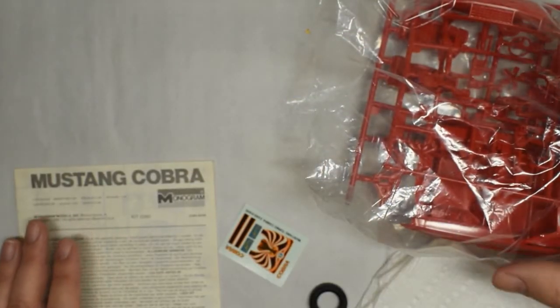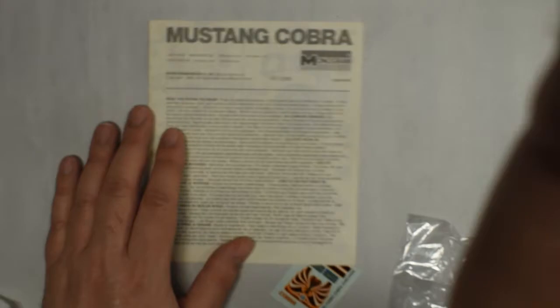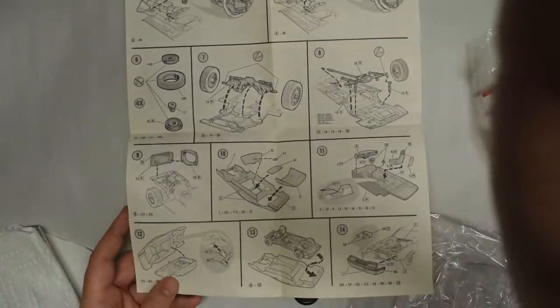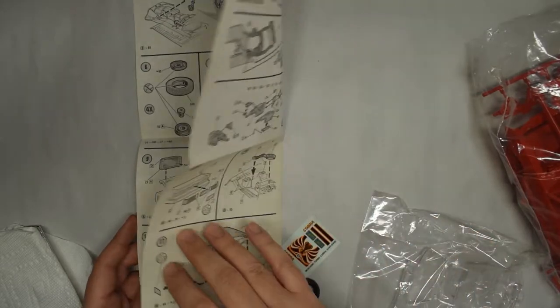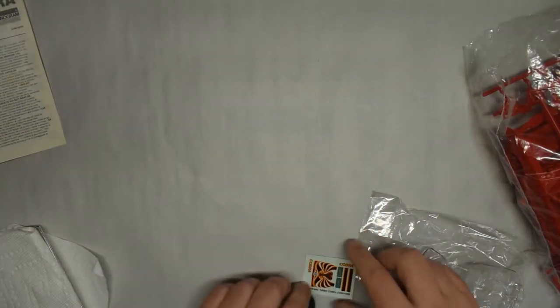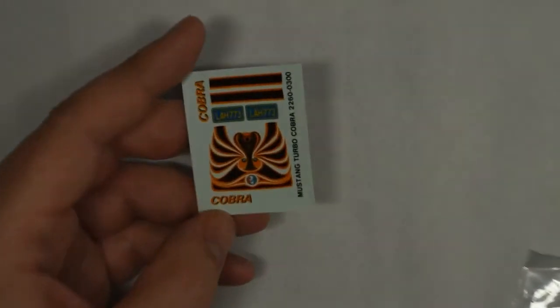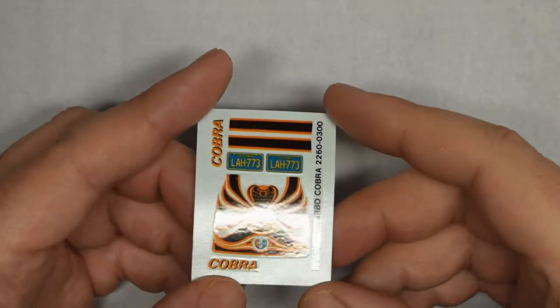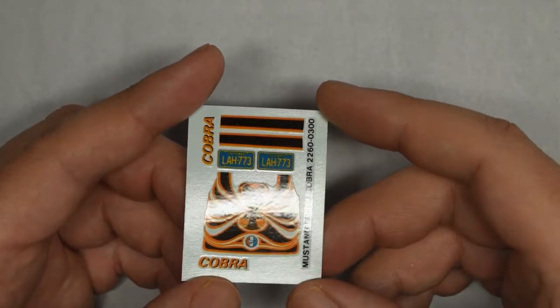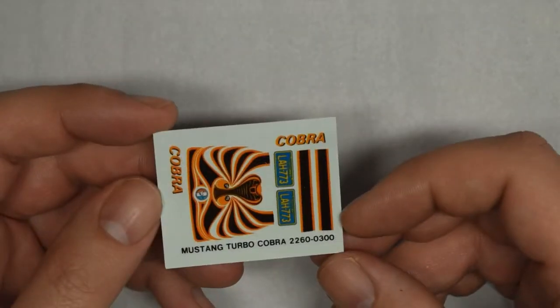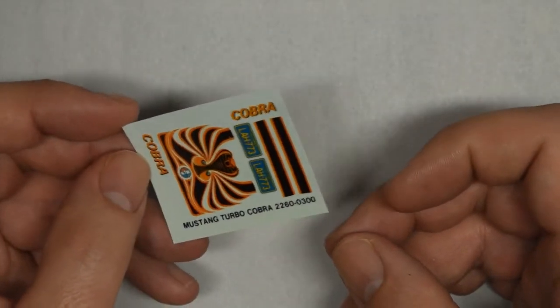Alright, let's look at the Monogram Mustang first. Let's start with the easy things. We have the instruction book, and it's one of the smaller instruction sheets in the typical Monogram format. Not a lot to see here, so if you've seen a Monogram instruction sheet, you've seen them all. Alright, the decal sheet. We've got a small decal sheet with the really cool Cobra logo, some stripes, license plates. This is the typical Monogram thick decal sheet. And even though this kit is from '79, I would venture these decals will probably still be usable.